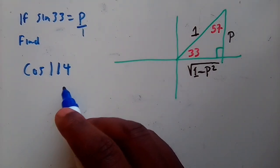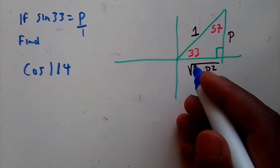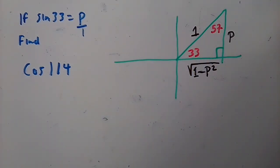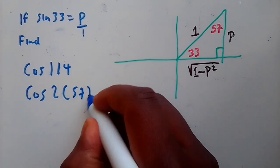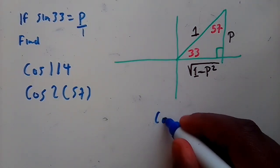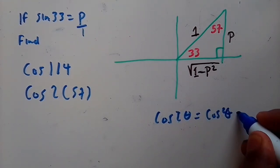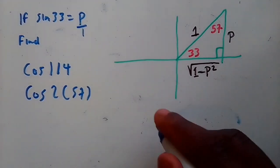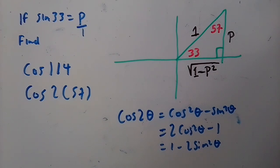For cos 114°, reducing it won't give one of our angles. It's not double 33°, but it is double 57°, since 2 × 57° = 114°. So we change it into a double angle form: cos 2(57°).